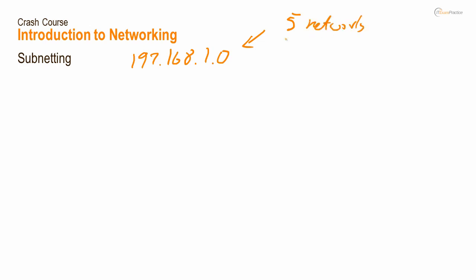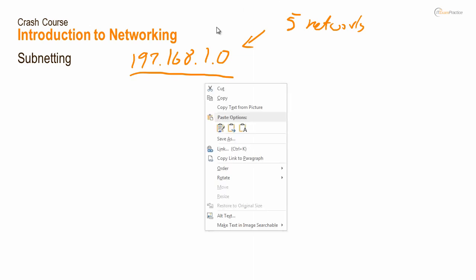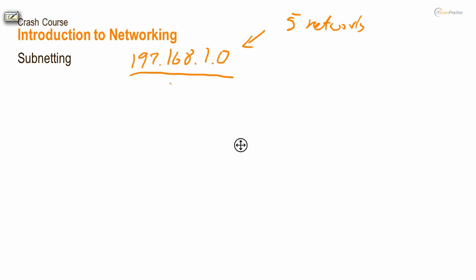192.168.1.0 and they ask you, can you be so nice and divide that IP address into five subnetworks. What does it mean? It means that we do not have enough IP addresses. We do not really need 254 IP addresses because that's what we have available over here.